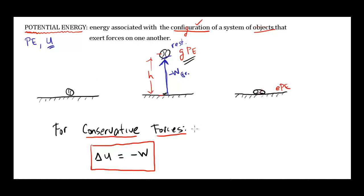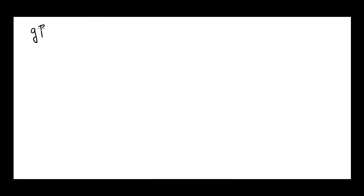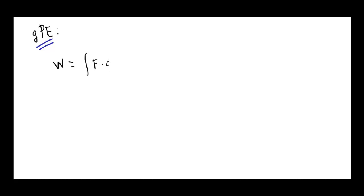Let's investigate our two conservative forces — gravity and the elastic force — and look at these two types of potential energy. Starting with gravitational potential energy: work is defined as the integral of F dot dx, and since the change in potential energy equals the negative of the work done, we can say that delta U equals negative of the integral of F dot dx.